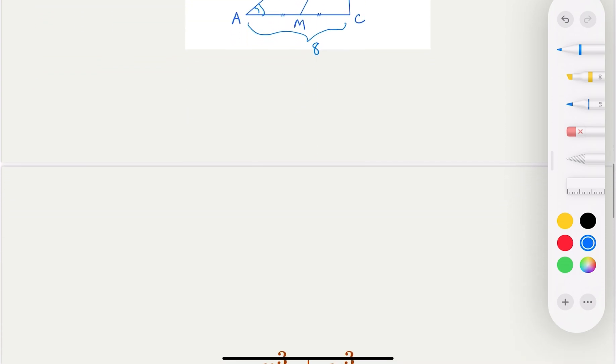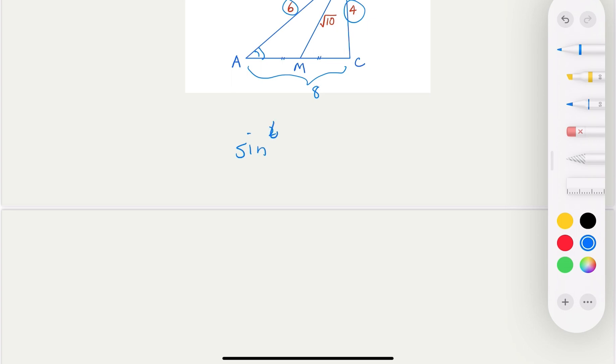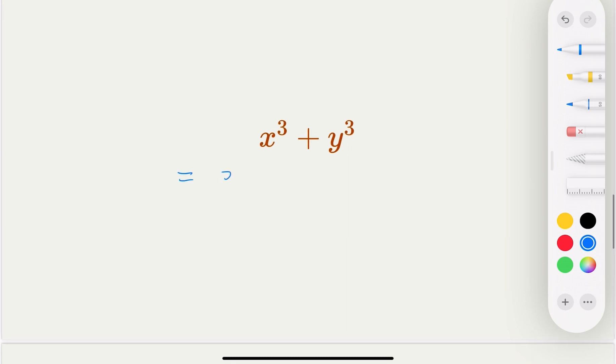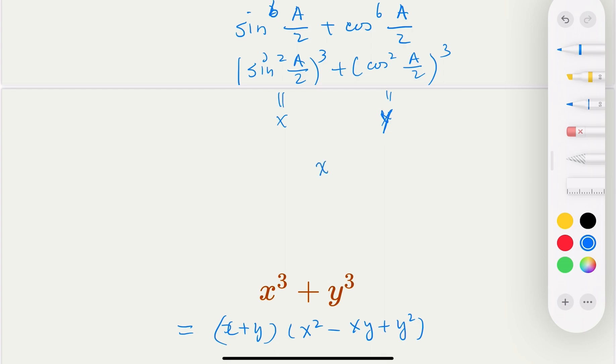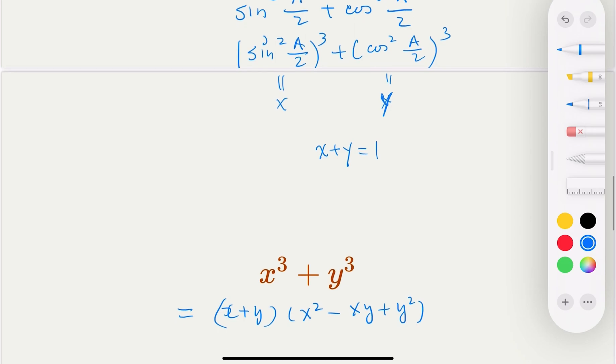All right, so now we need to find this quantity here, sixth power, plus cosine. Now, it's good to know this formula here. So you will recall, this would equal x plus y times x square minus xy plus y square, in general here. Why is this useful? Well, because this sixth power is considered sine square and then to the third power, and this is cosine square and then third power. So in other words, this is x, this is y. In this case, there's a special property that x plus y equal to one because sine square plus cosine square is equal to one. So we try to take advantage of that.